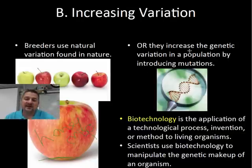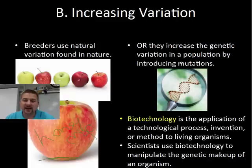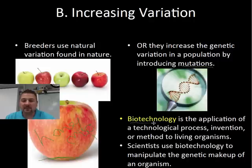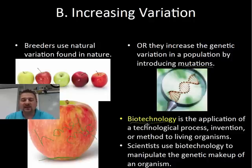If the variation is not found in nature, scientists can actually induce mutations. When we look at the term mutations — which we learned about in the previous chapter — you're taking the structure of DNA, the A's, T's, G's, and C's, and trying to change them. The application of this is called biotechnology, where we work with the genetics of organisms and try to change or manipulate them.